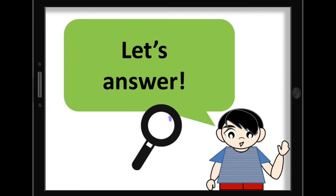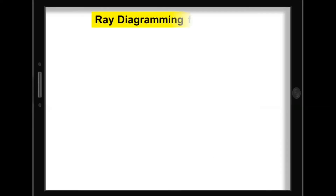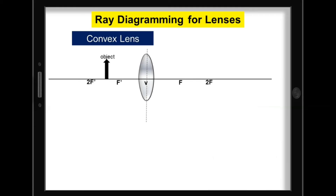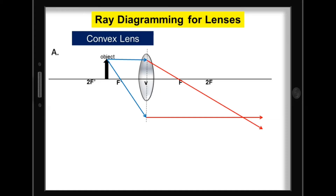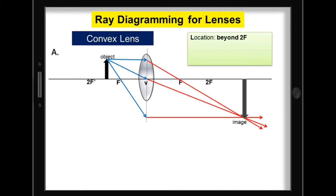Let's check your answers! For ray diagramming for convex lens, for A, where the object is located between 2F and F, we can use the PF ray, the FP ray, and even the V ray. Notice the merging of the refracted rays behind the lens. The location of the image is beyond 2F. For the orientation, it is inverted. For the size, it's enlarged. And for the type of image, it's a real image.